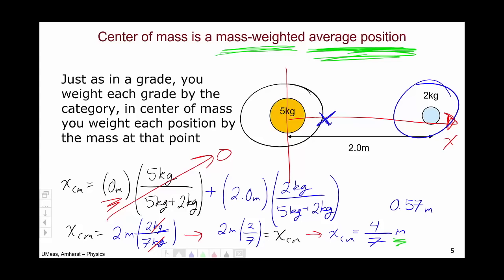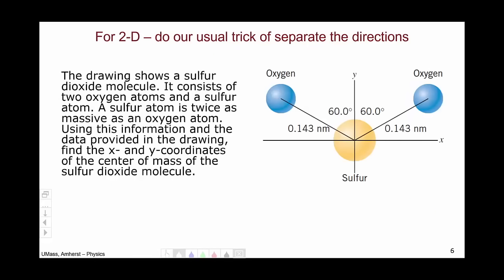So that's the center of mass in one dimension. What happens if we have masses in more than one dimension, say two? Well, the way we handle this is as usual we separate the directions. We deal with x and we deal with y and we deal with them separately.